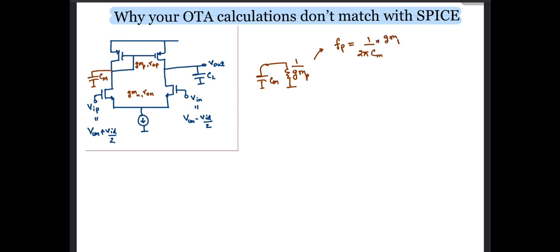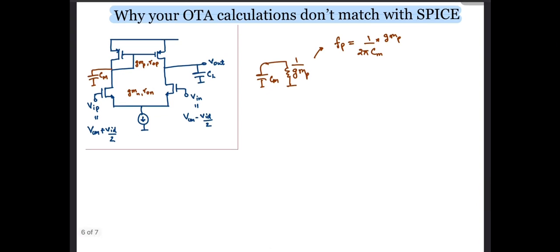Now let's compute the location of the zero. The source of the NMOS is a small signal ground for differential operation. We thus arrive at the small signal model as shown.